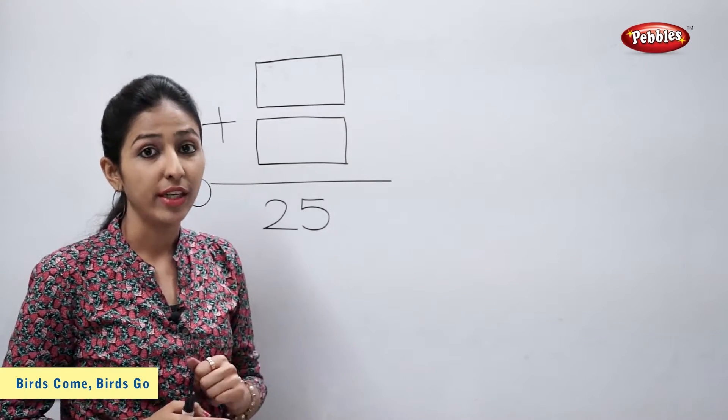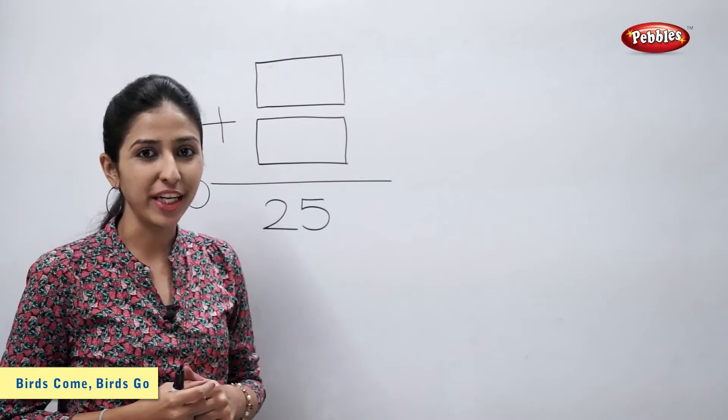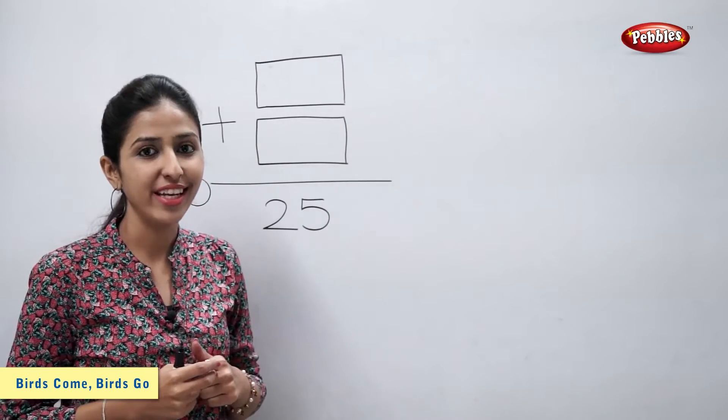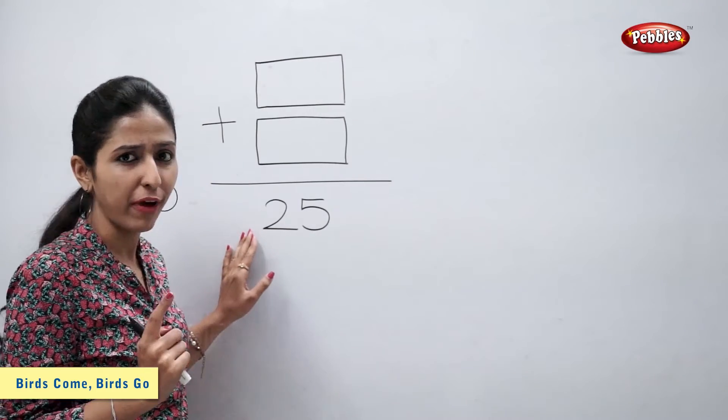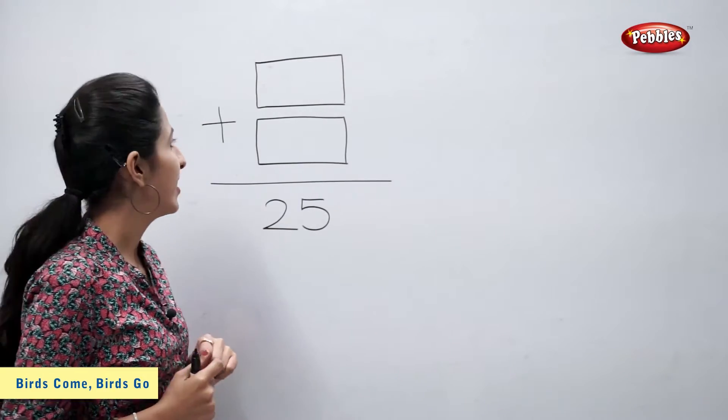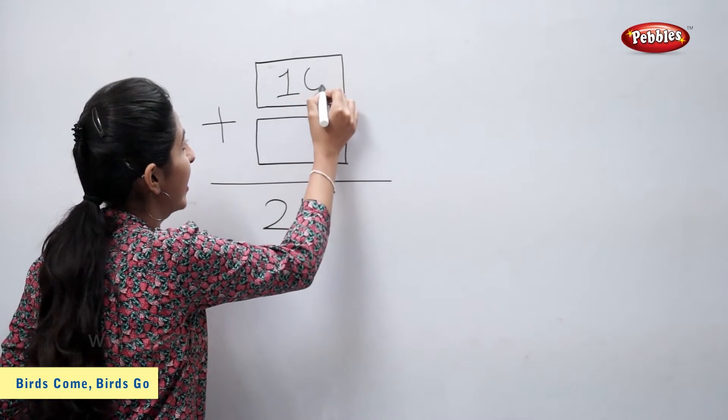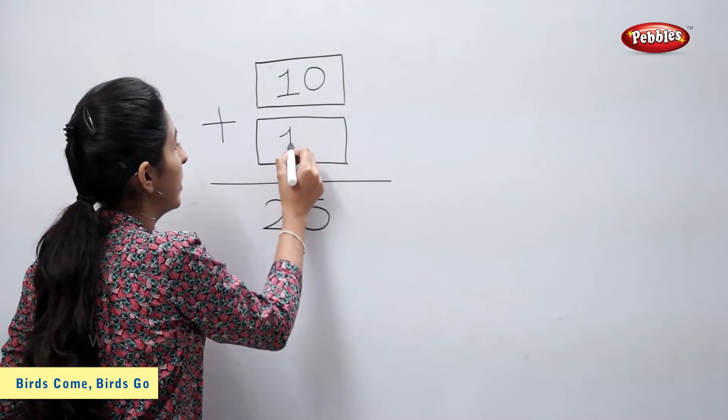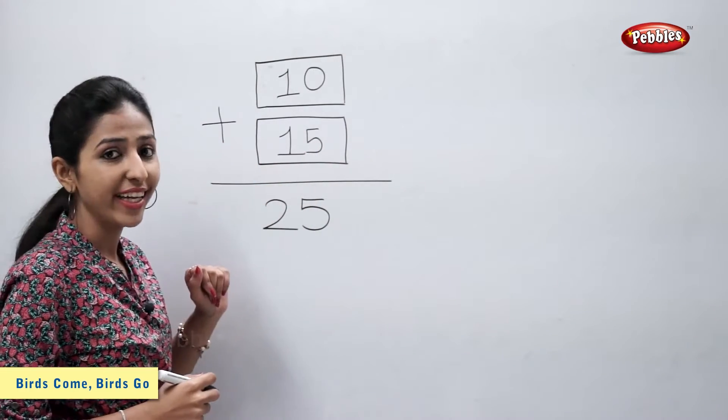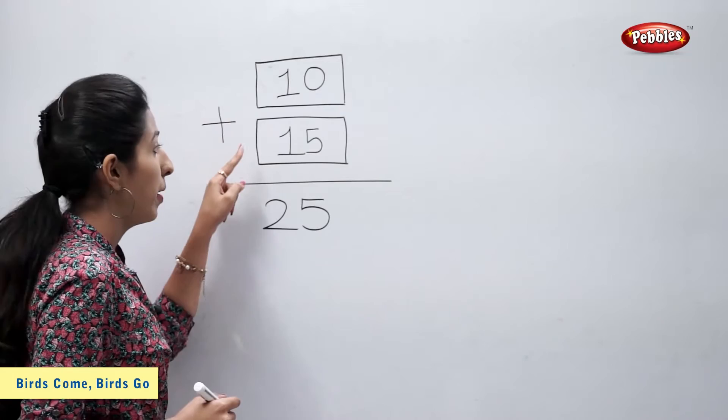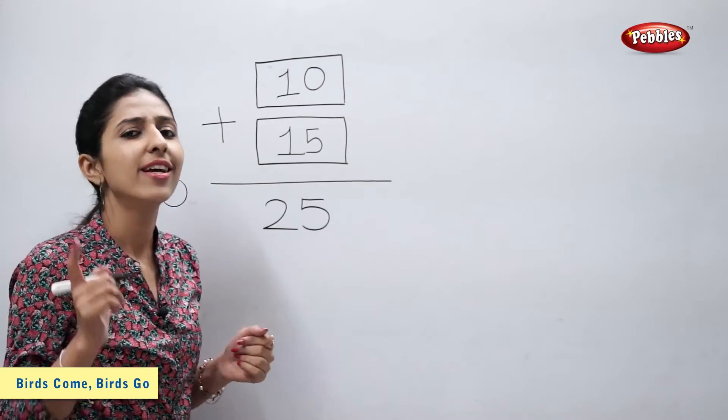Remember students, to get a particular number, we can use combination of various numbers. For example, to get answer 25, I can use 10 plus 15. Now 10 plus 15 is equal to 25. Similarly,